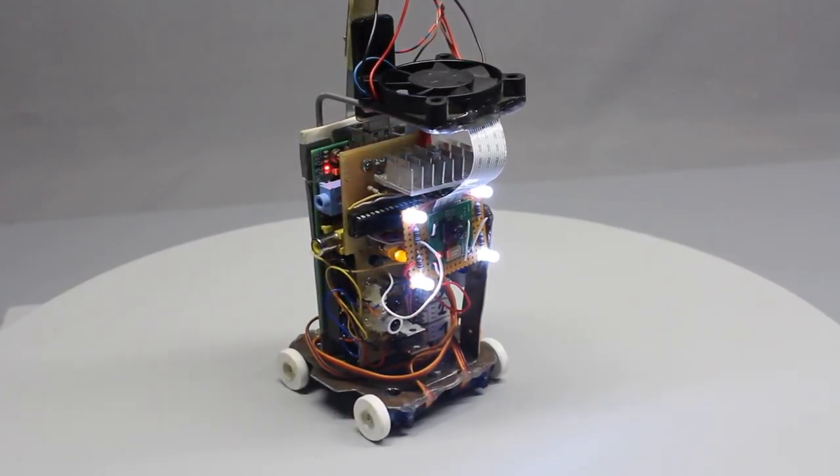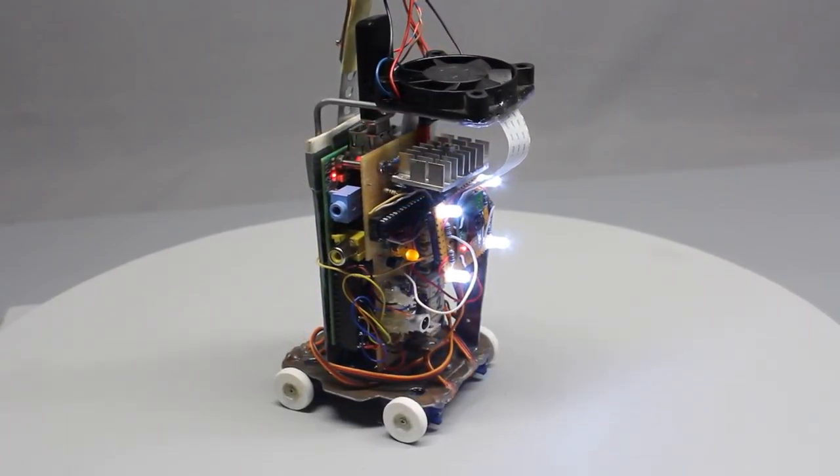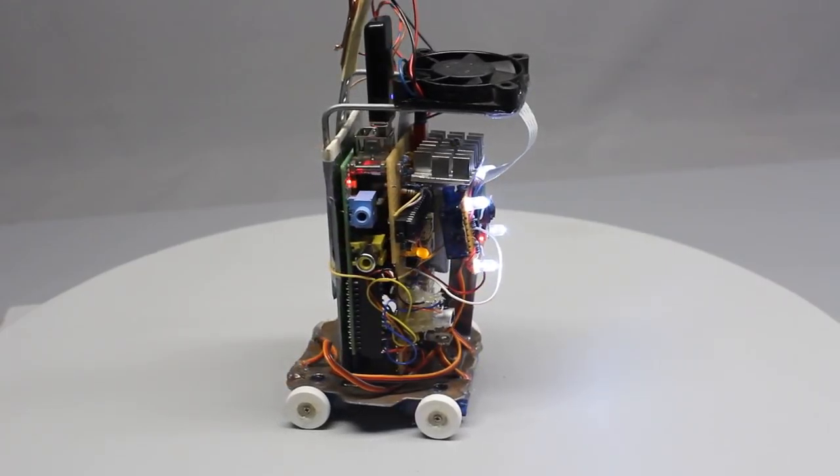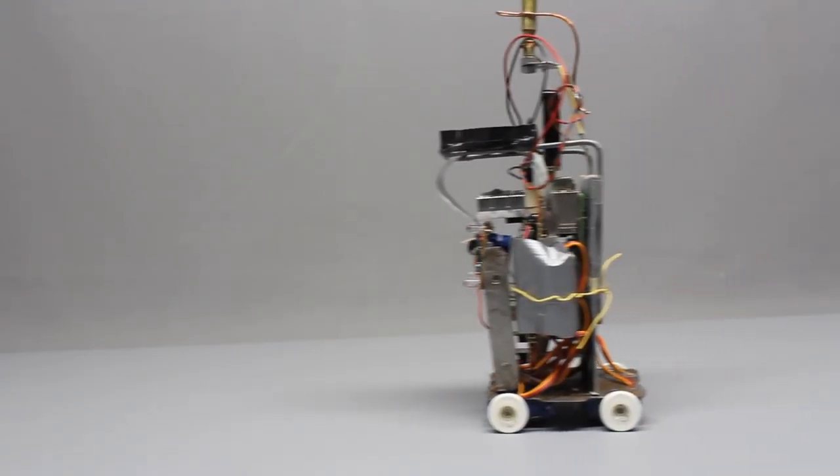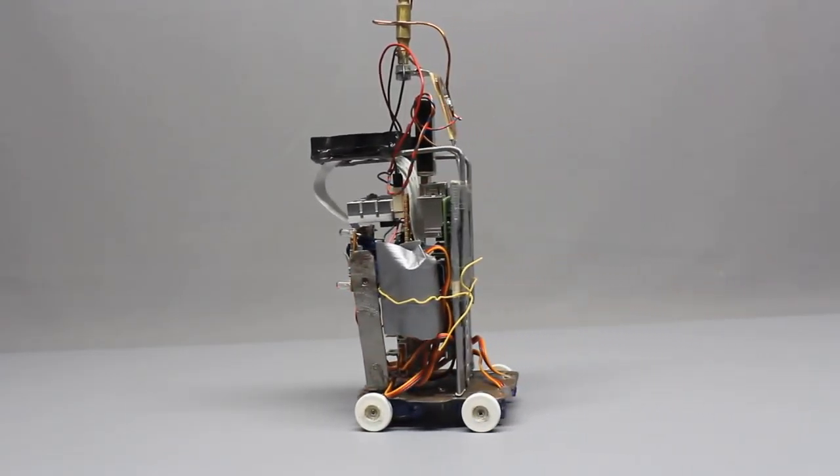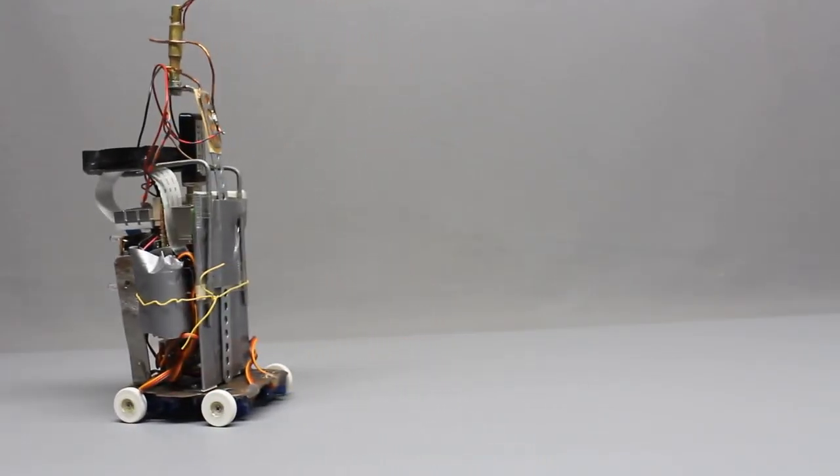Additionally, this rover has a second brain which is an Atmega328P with Arduino bootloader. The undercarriage is composed of 4 servos with their control lines being connected to the Atmega328P.